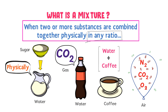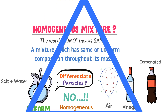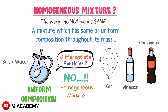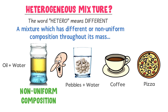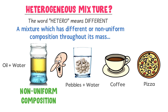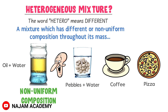To summarize: we learned that when two or more substances are combined together physically, we get a mixture, like a sugar solution. Secondly, a mixture is a homogeneous mixture if it has the same or uniform composition throughout its mass — for example, salt solution. Thirdly, a mixture is a heterogeneous mixture if it has different or non-uniform composition throughout its mass — for example, when you add oil to water. This was all about mixture and types of mixture.